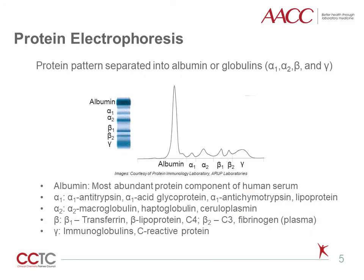Protein electrophoresis separates protein patterns into albumin or globulins. Globulins consist of alpha-1, alpha-2, beta, and gamma. Albumin is the most abundant protein of human serum. The alpha-1 region contains alpha-1 antitrypsin, alpha-1 acid glycoprotein, alpha-1 antichymotrypsin, and lipoprotein. The alpha-2 region consists of alpha-2 macroglobulin, haptoglobin, and ceruloplasmin. The beta region can be divided into beta-1 and beta-2. Beta-1 consists of transferrin, beta-lipoprotein, and C4, while beta-2 consists of C3 and fibrinogen. The gamma region contains immunoglobulins and C-reactive protein. Immunoglobulin A can migrate in the beta region as well.